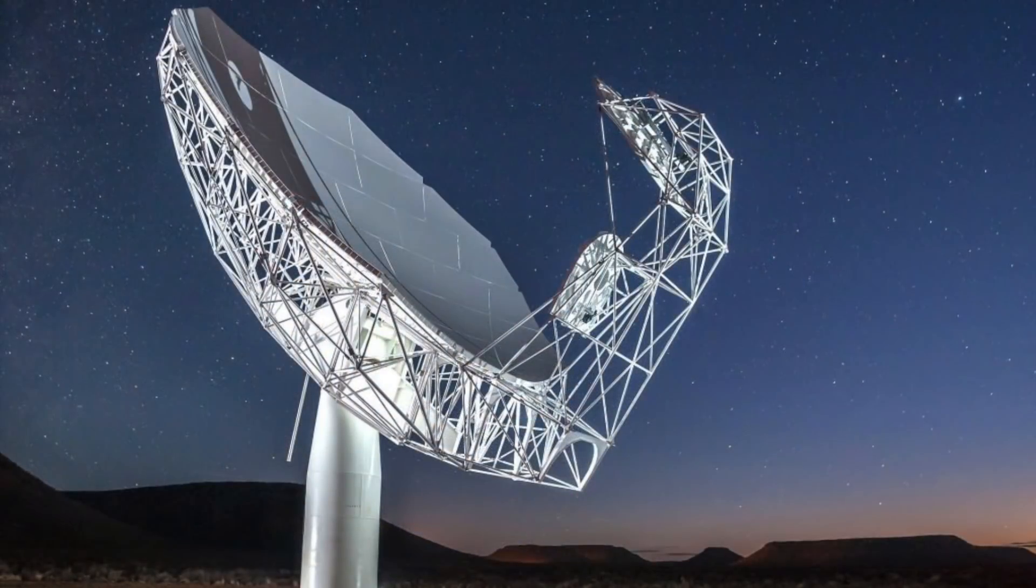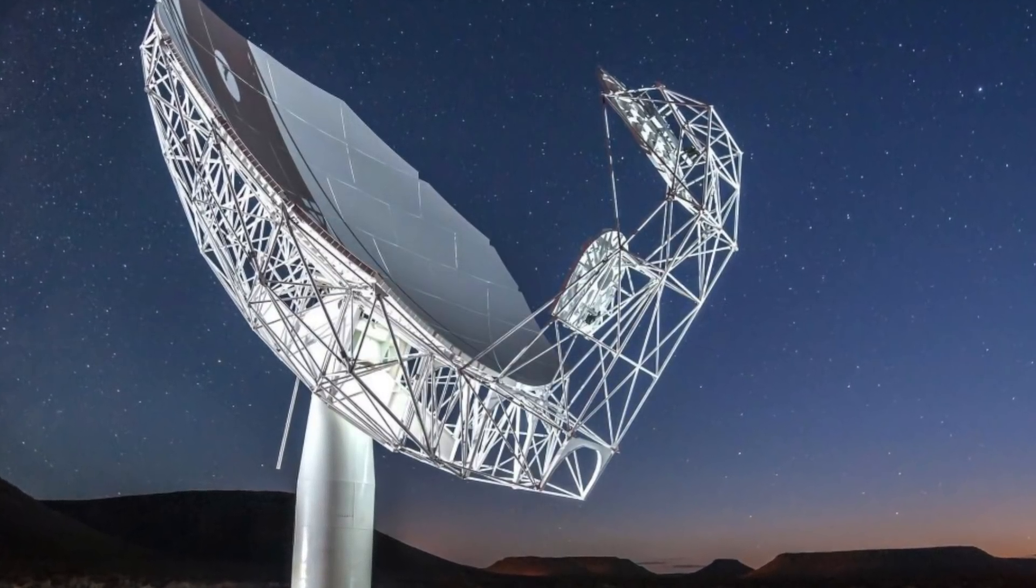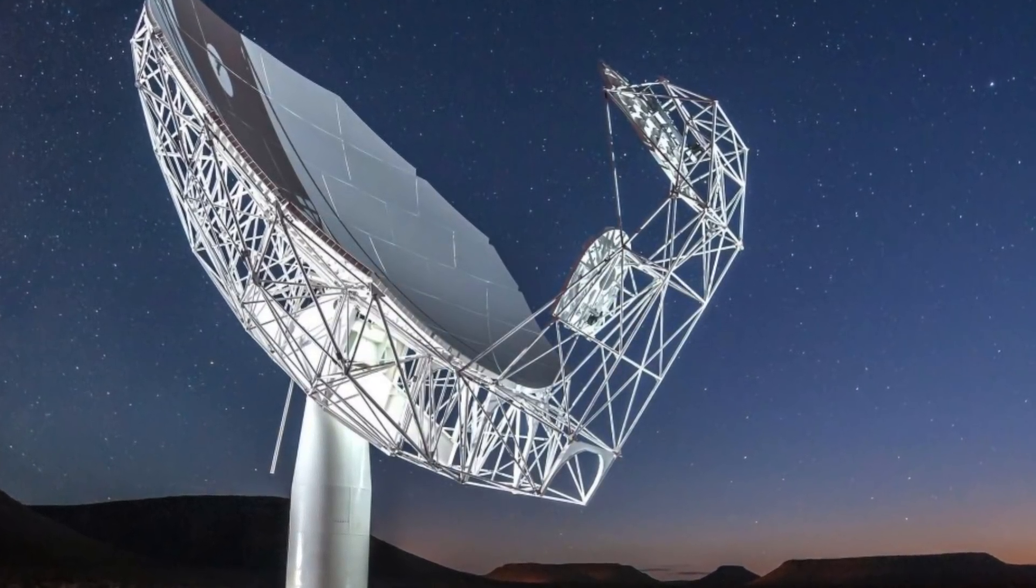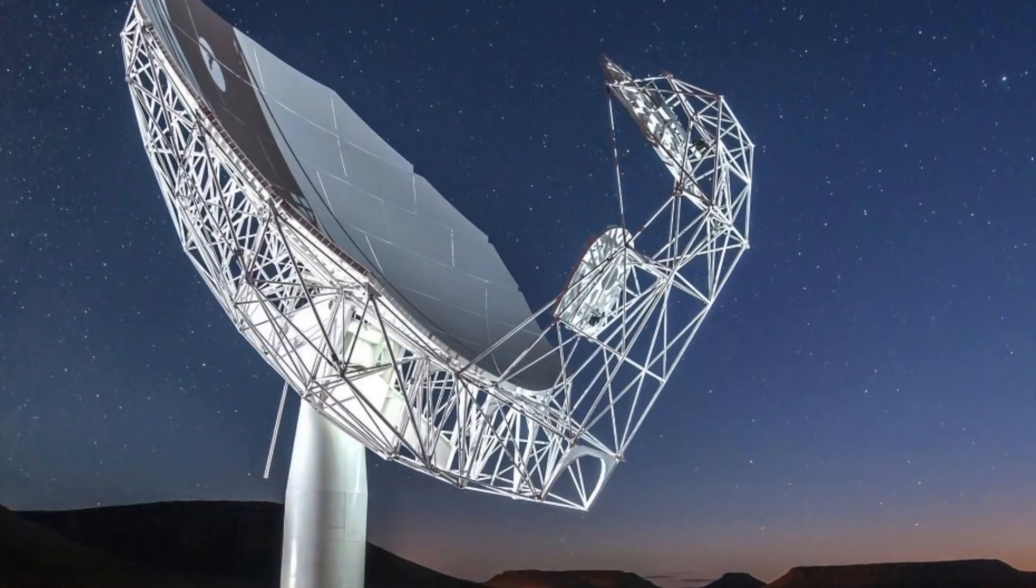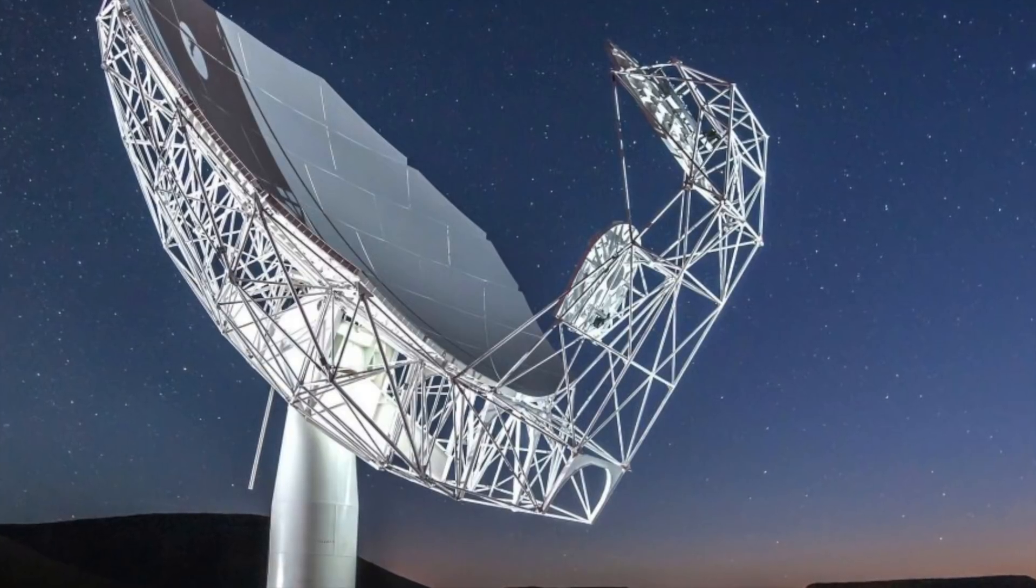The telescope in question is a combination of 64 individual dishes, all of which are able to pick up radio waves. The Meerkat Telescope is located in South Africa. It's one of the largest and most sensitive radio telescopes in the Southern Hemisphere.